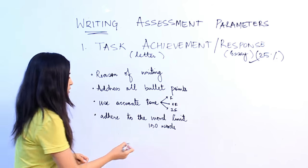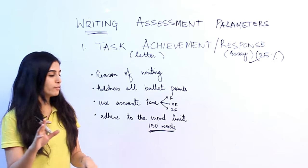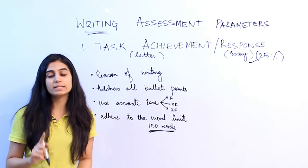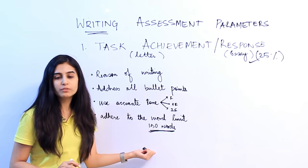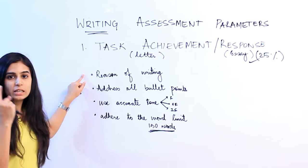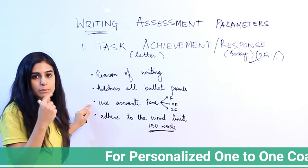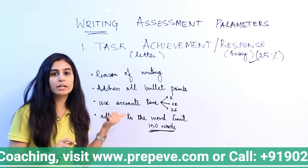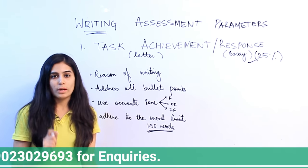Number four: adhere to the word limit. Your letters are supposed to be at least 150 words. Writing even one word less than 150 would cause you a penalty. So focus on writing more than 150 words, but aim to end your letter by 160 or at most 170 words. To recap: write the reason for the letter, address all three bullet points, use accurate tone, and write more than 150 words. Not adhering to the word limit is the silliest mistake you can make.